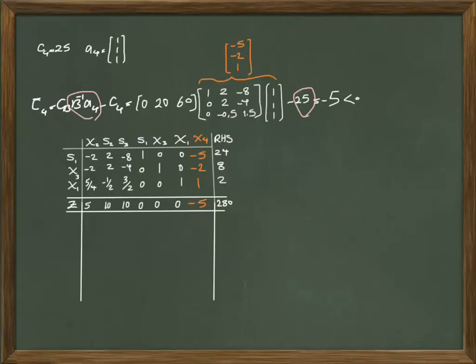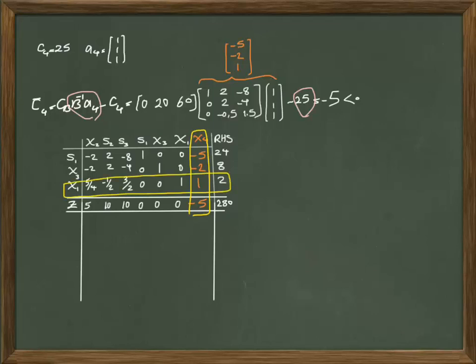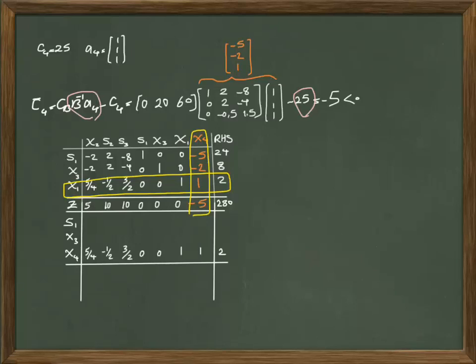When you have a negative value in the row of Z for a maximization problem, the current table is not optimal — optimality requires everything in the row of Z to be positive or zero. We have negative 5, so we must continue to the next table. The most negative value identifies the entering variable. The only row eligible for the minimum ratio test is the third row, so that becomes the pivot row. Using elementary row operations, the pivot element must have a value of 1 in the next iteration — since it already is 1, we keep it as is.